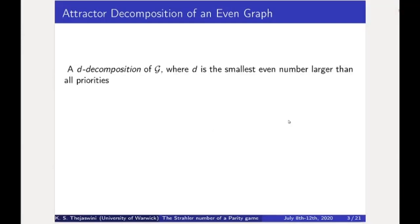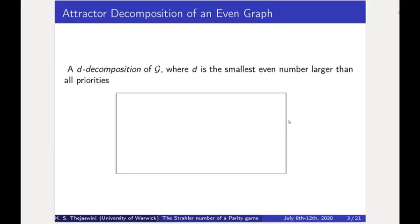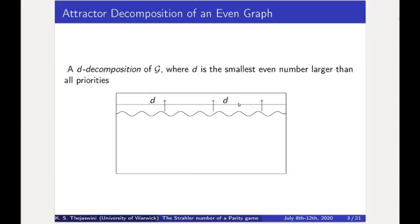Now let us look at an even graph. Let D be an even value that is at least as large as any of the priorities. Suppose that if you look at the set of all vertices of priority D and look at its attractor, it happens to be all of the graph. Then we know that this graph is even because all cycles will contain this highest even priority D. But this need not be the case — it might be that the attractor A of this set is just a strict subset. If that happens, then we look at the rest of the graph and identify S1, a set of vertices where the highest priority is at most D minus 2, and moreover it has no edges to this part of the graph.